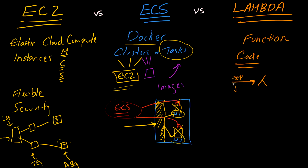You upload a zip file or jar file and give it an entry point — the file and function name you want to serve as the entry point. What you get back is an ARN, an Amazon Resource Name. Whenever you want to invoke this code, you use the AWS Lambda SDK and invoke the ARN. Behind the scenes, Lambda provisions an EC2 instance, loads all your code onto that machine, and invokes the function you uploaded.